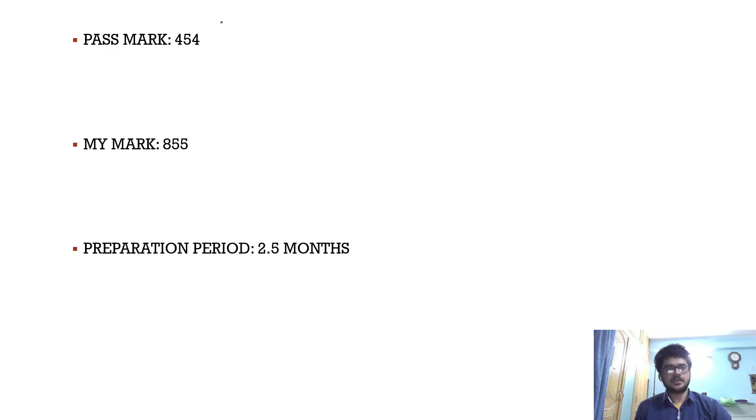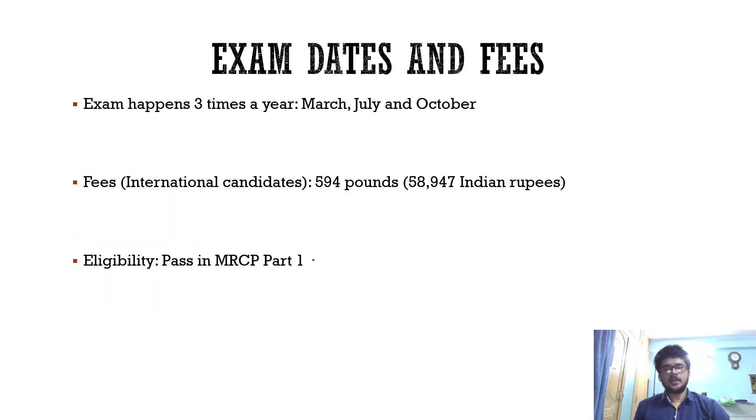Just like Part 1, it's a best of 5 format, but another important difference is the five options are going to be very similar to each other, so you'll be very cautious in selecting the right answer. In my session, the pass mark was 454. I had taken the exam in October 2020 and scored 855, but remember marks don't matter, you just got to pass. The pass mark in Part 2 is much less compared to Part 1.